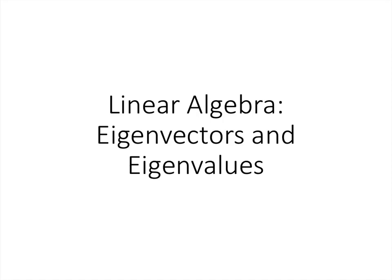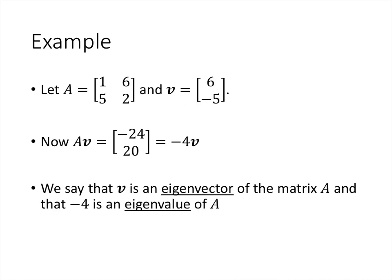In this lecture, we'll talk about eigenvectors and eigenvalues. The basic idea behind eigenvectors and eigenvalues is pretty simple. In this example, we take a matrix A, multiply it by a vector v, and what we happen to find is that in this case, what we get is a scalar multiple of v.